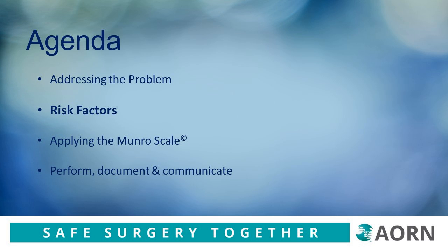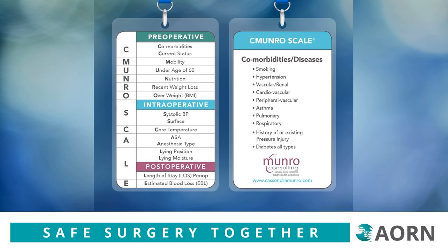Let's take a few minutes to review these risk factors using the mnemonic C-Munro Scale. This acronym was created for the education of nurses and to aid recall of the perioperative risk factors. What you see on this slide is not the Munro Risk Assessment Scale — I'll show you that next and teach you how to use the Munro Scale to perform a risk assessment. This image shows the lanyard you can make from a template available in the toolkit. Familiarizing yourself with the risk factors will facilitate using the Munro Scale Risk Assessment.